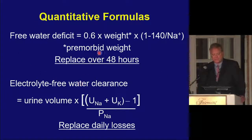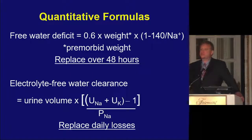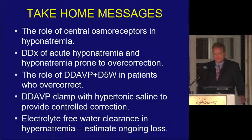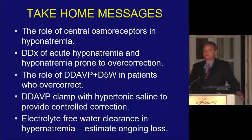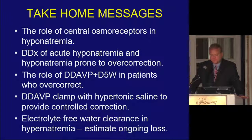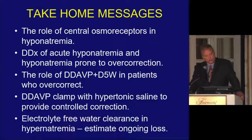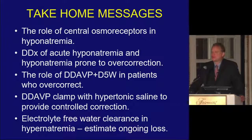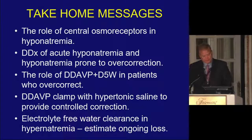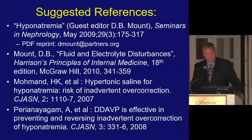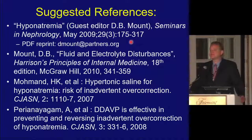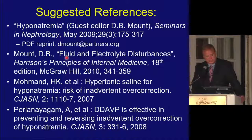Take-home messages: the role of central osmoreceptors in hyponatremia; the differential diagnosis of acute hyponatremia and hyponatremia prone to overcorrection — important differentials we don't talk about enough; the role of DDAVP and D5W in patients who overcorrect; the DDAVP clamp with hypertonic saline for controlled correction in hyponatremia; and the electrolyte-free water clearance in hyponatremia to estimate ongoing loss. There's a seminars in nephrology issue going through everything you needed to know about hyponatremia — email me and I'll send it. Key references include Rick Stearns' papers and my Harrison's chapter.